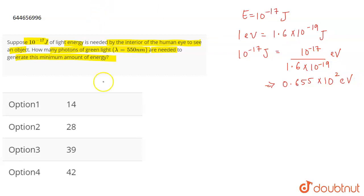Now, you have to calculate the number of photons of green light needed. So, energy is equal to N H C by lambda, where N is the number of photons, H is the Planck's constant, C is the speed of light and lambda is the wavelength.